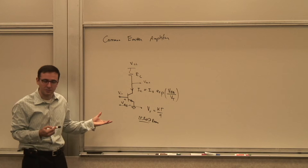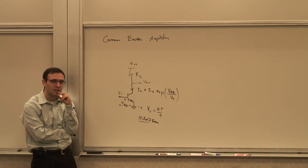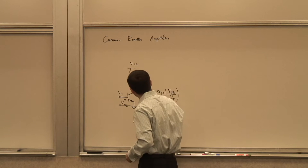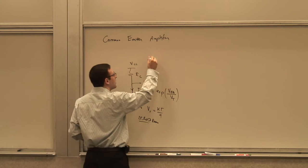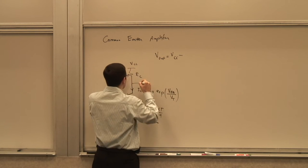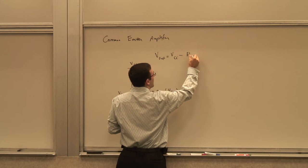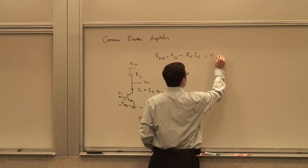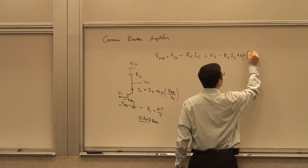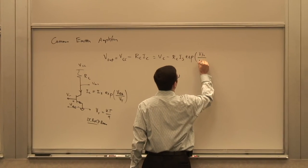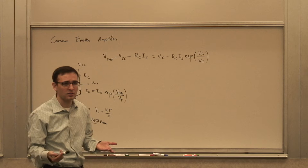Let's analyze the relationship between Vout and Vin. Vout equals VCC minus the voltage drop across the resistor, which is RC times IC. And IC is related to Vin through the exponential: Vout = VCC - RC * IS * exp(Vin/VT). This is what we call the large-signal nonlinear transfer function.